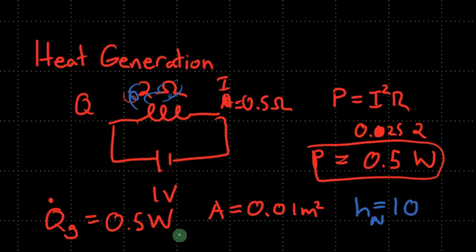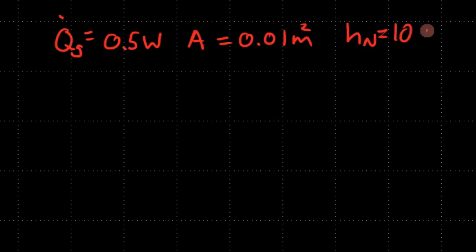So what you can actually do in this case, given all of these data which I gave you, also assuming that the outside temperature is 20 degrees C, and let's not worry about radiation right now, you can actually calculate the final temperature of this coil. So what were the parameters that I gave you? Q generated was 0.5 watts, the area was 0.01 meters squared, and the natural heat convection coefficient was equal to 10.